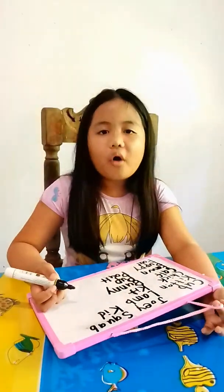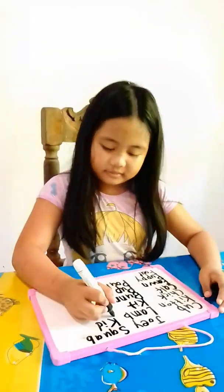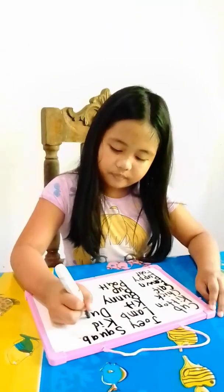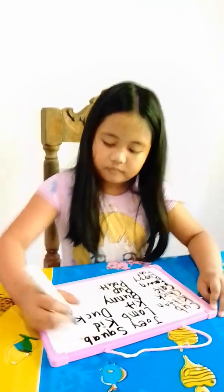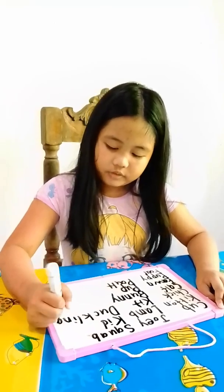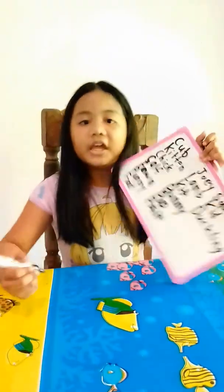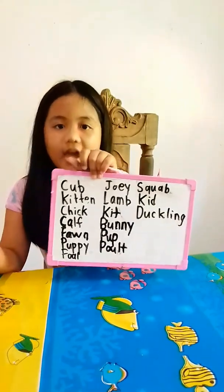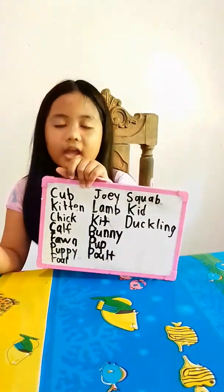What do you call the baby of a duck? The baby of a duck is a duckling. The spelling is D-U-C-K-L-I-N-G.